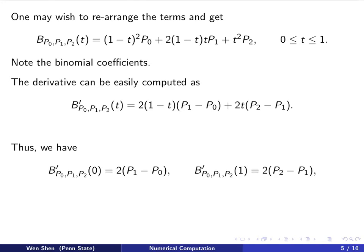If you plug in t equals 0, the second term vanishes and we have only the first term, so we get 2(P1 - P0), which indicates that the curve leaves the point P0 in the direction of P1.